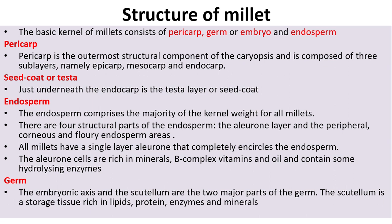Structure of millet: the basic kernel of millets consists of pericarp, germ, embryo, and endosperm. The pericarp is the outermost structural component of the caryopsis and is composed of three sub-layers: epicarp, mesocarp, and endocarp. The seed coat is also known as testa. The endosperm comprises the majority of kernel weight for all millets, and all millets have a single layer of aleurone that completely encircles the endosperm.